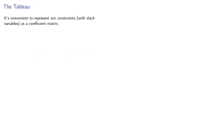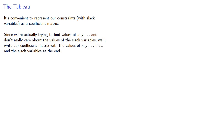It's convenient to represent our constraints with slack variables as a coefficient matrix. Since we're actually trying to find the values of x, y, and so on, we don't really care about the values of the slack variables, so we'll write our coefficient matrix with the values of x, y, and so on first, and the slack variables at the end.